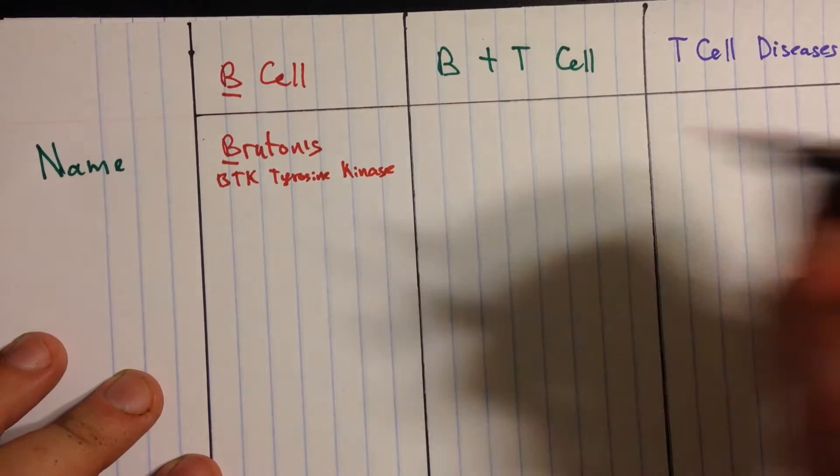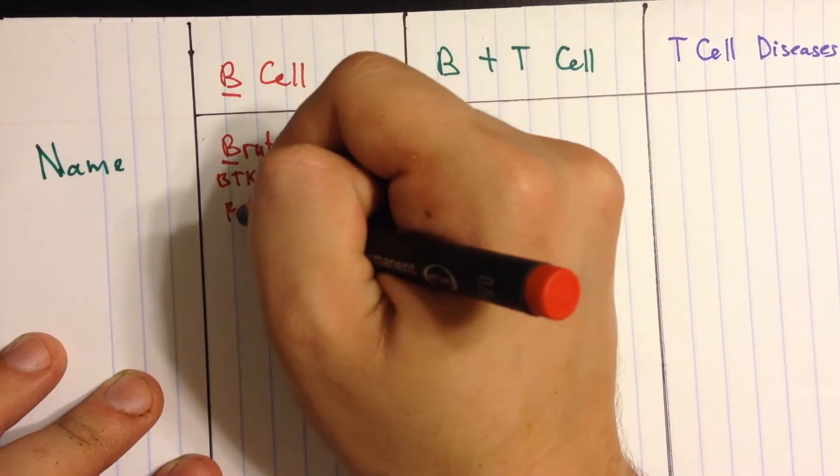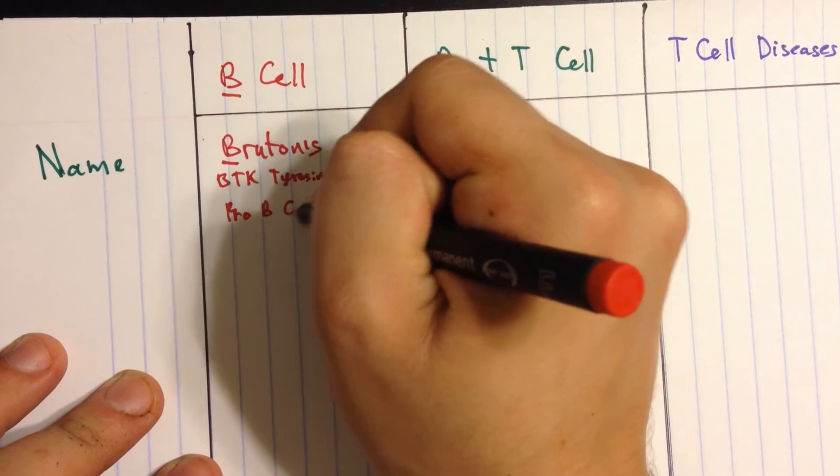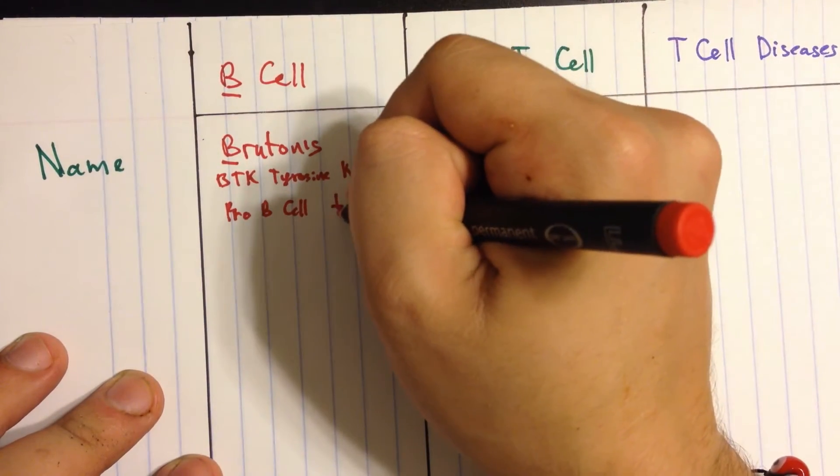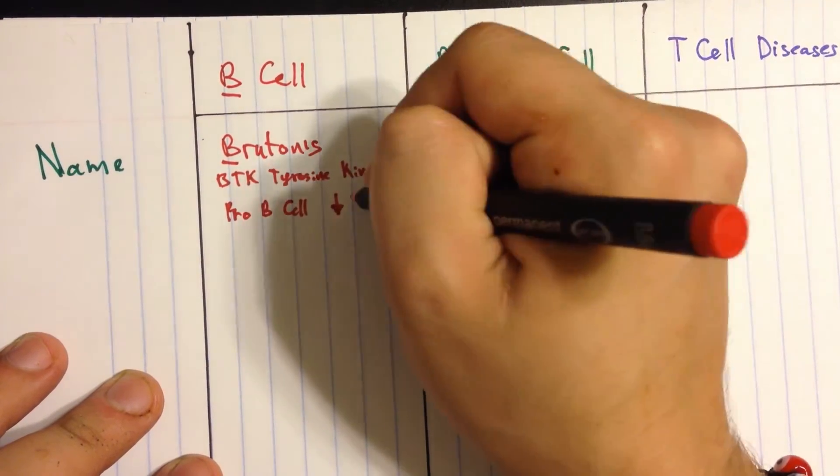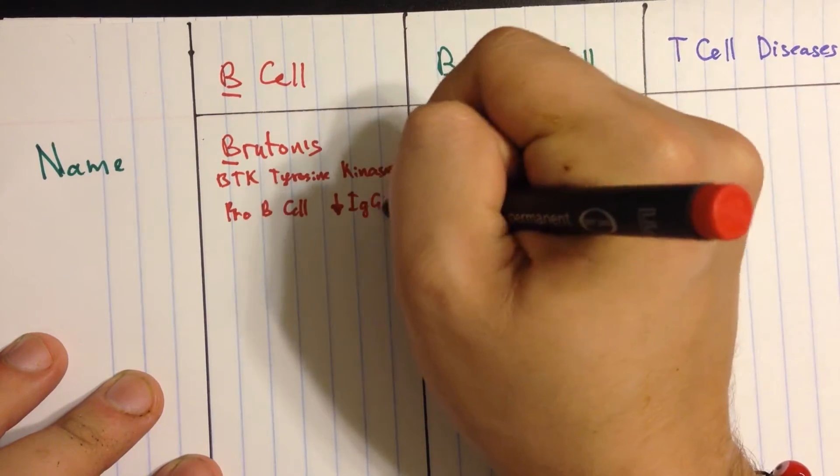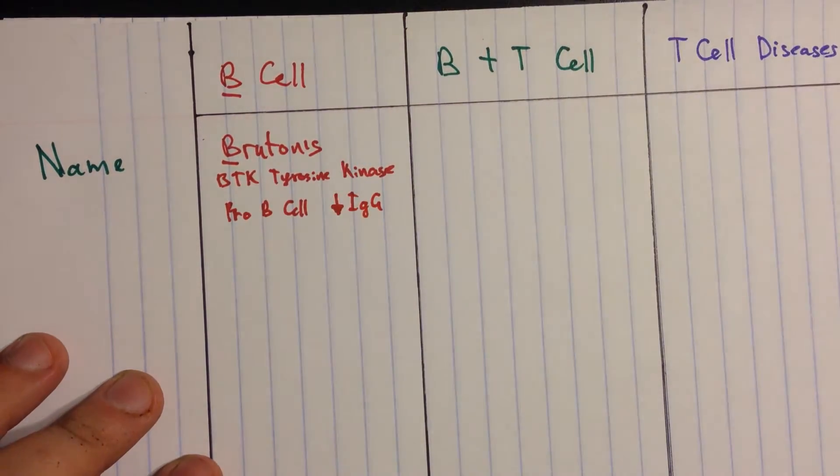So you have immature B cells and we call those pro-B cells. And pro-B cells can't make antibodies so you end up with defective production and you have low IgG. That's not so bad.